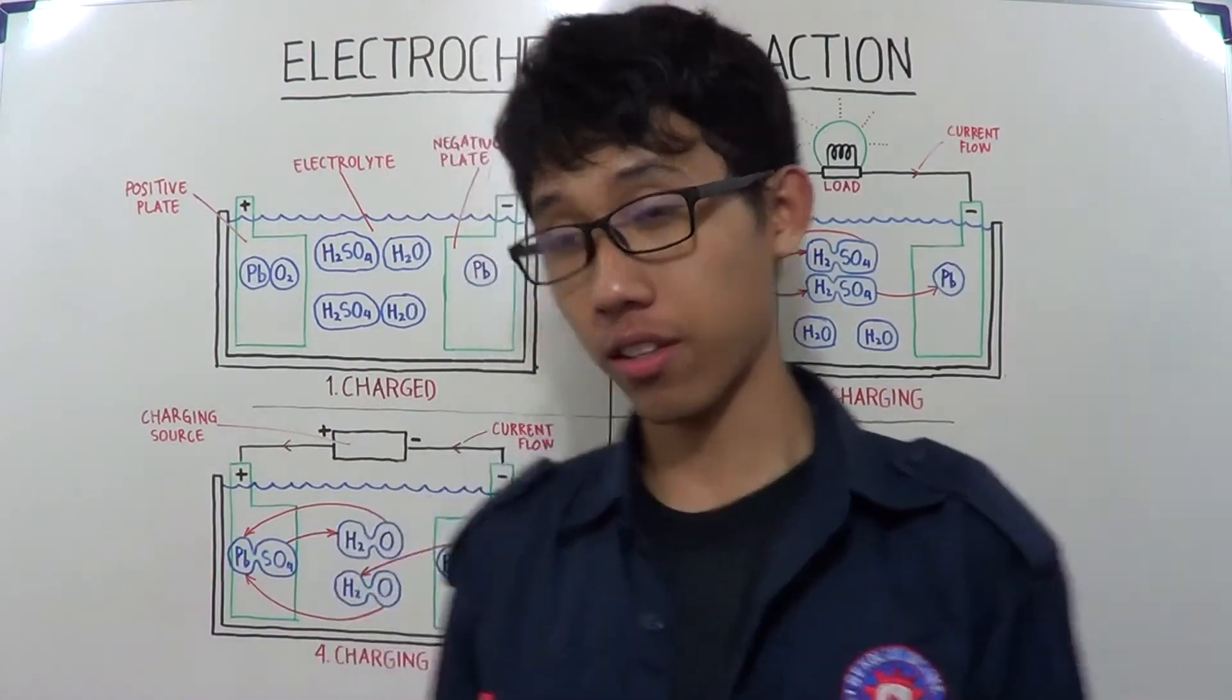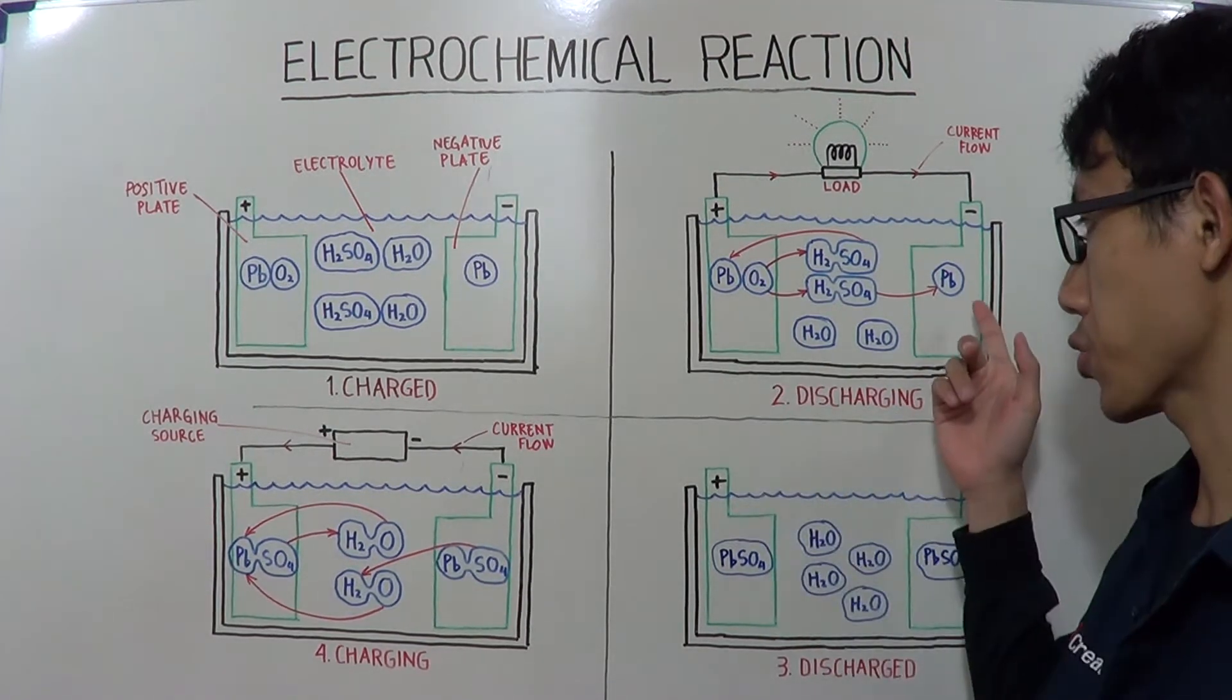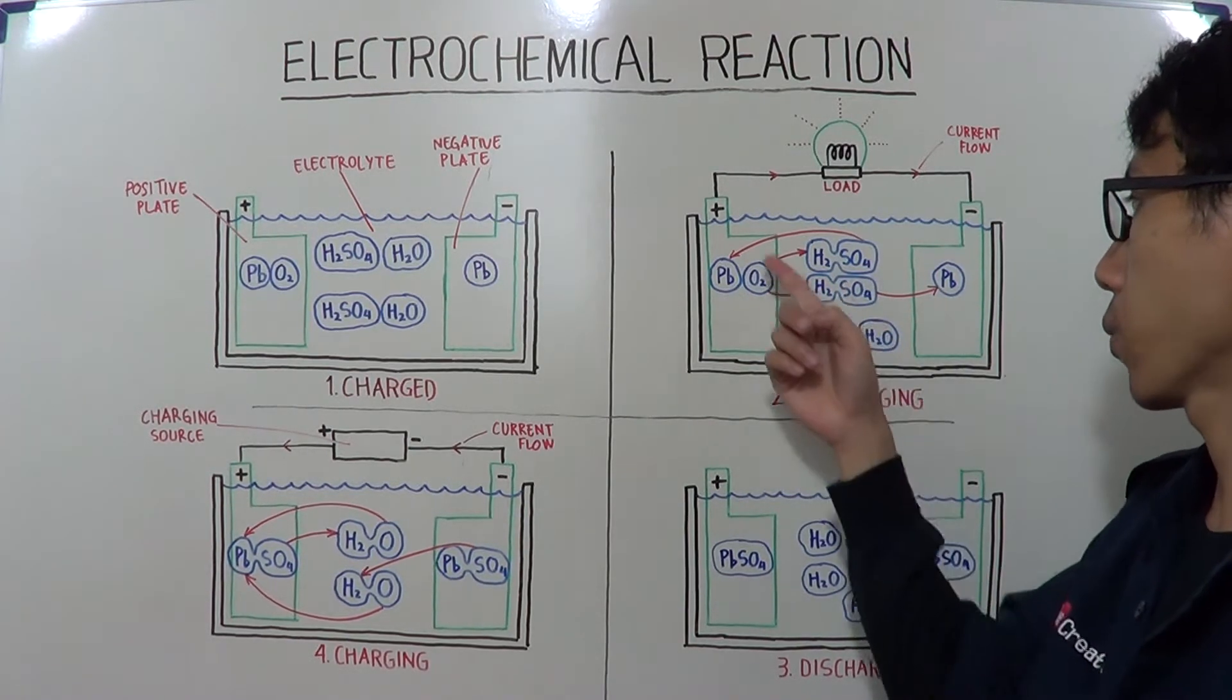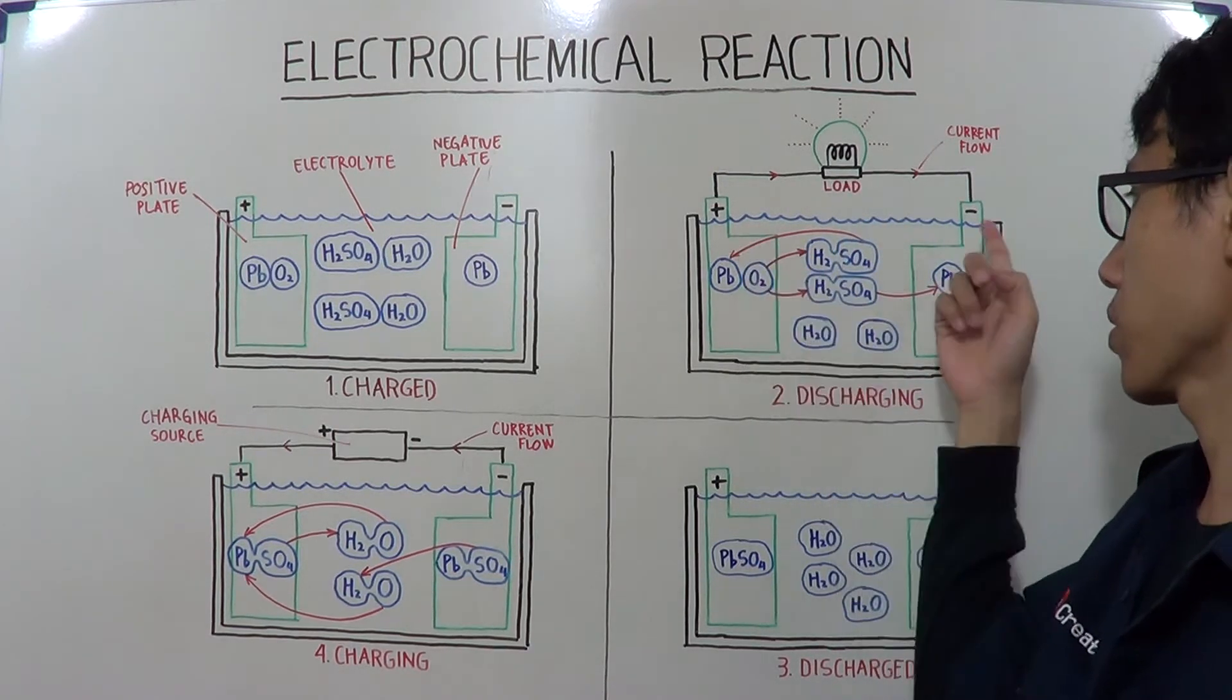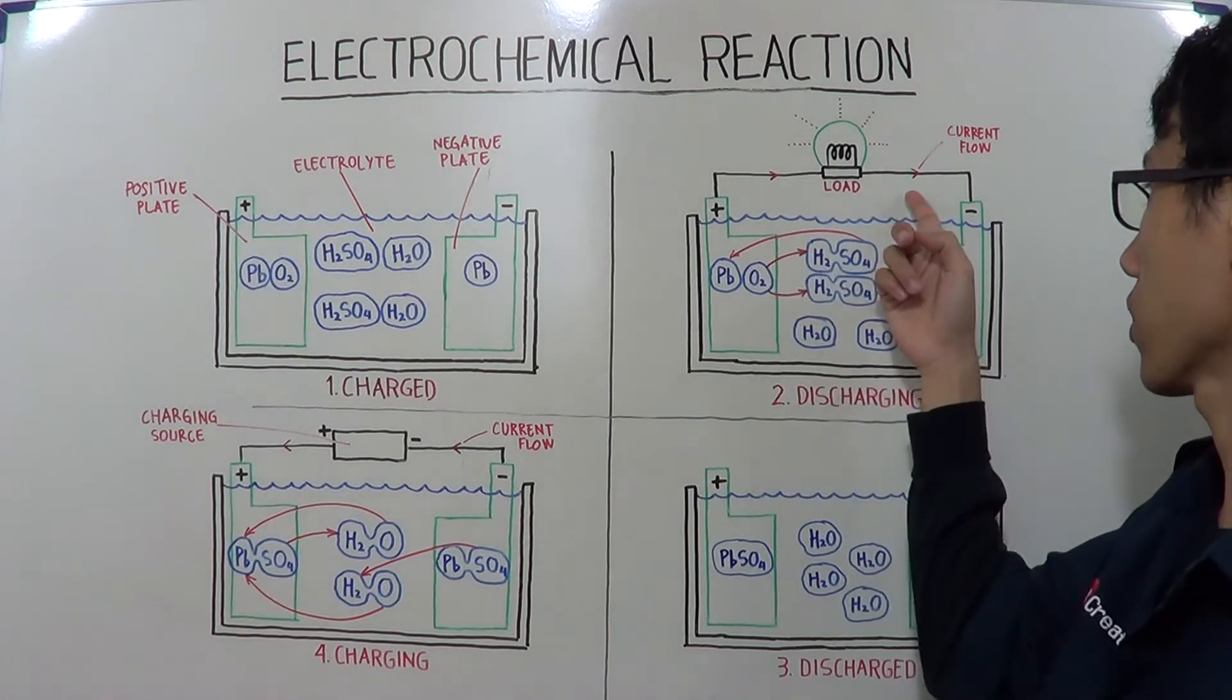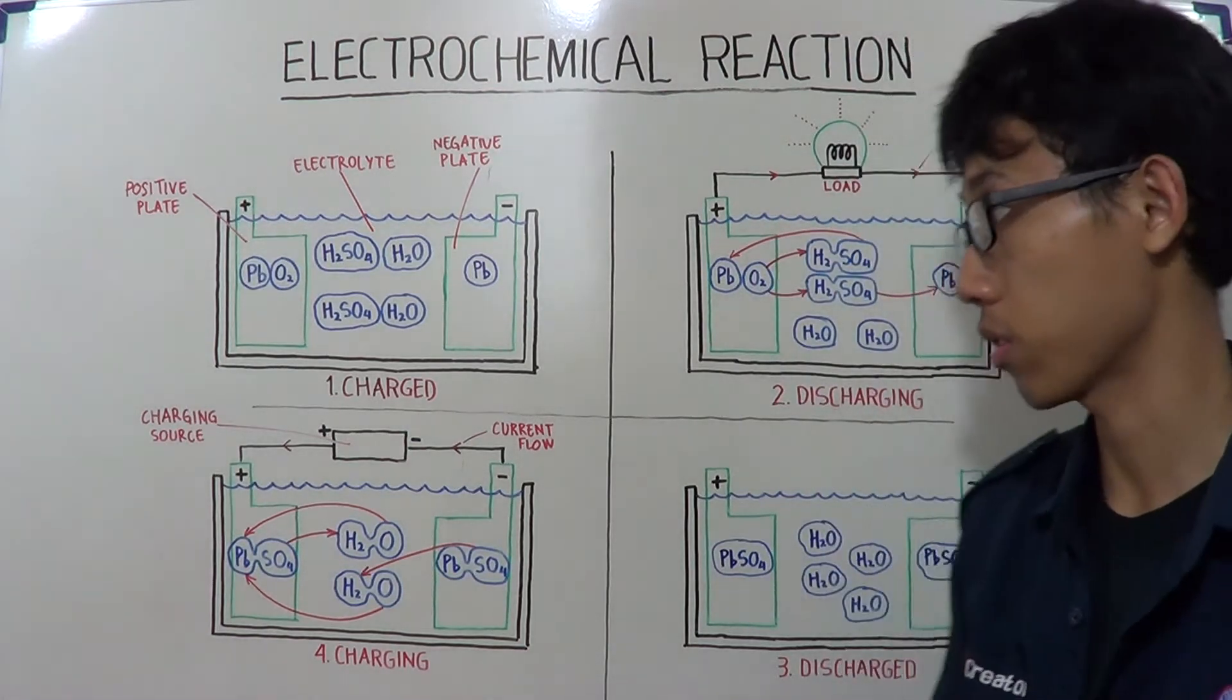Now, the second stage is the discharging stage, or when you use the charged battery with a load. For example, when we use a lamp connected to the positive and negative terminal of this battery. And this is the current flow from the positive to the negative terminal of the battery.